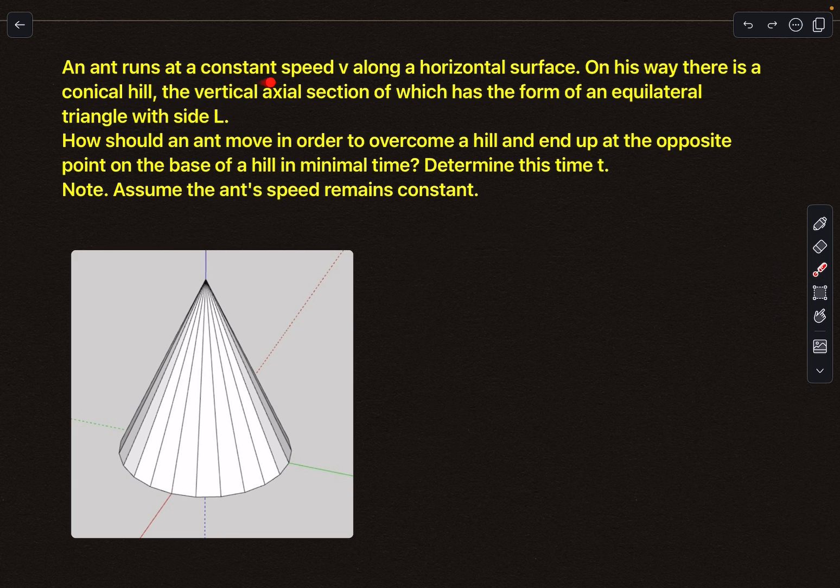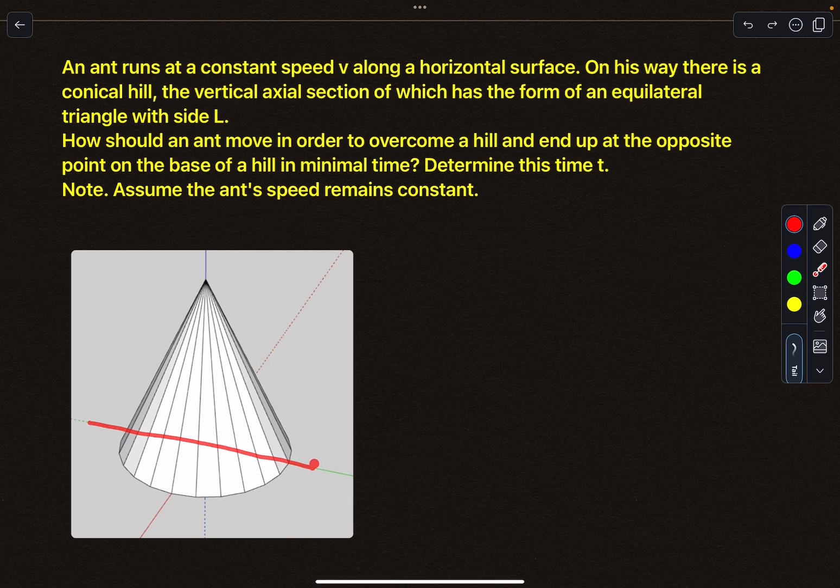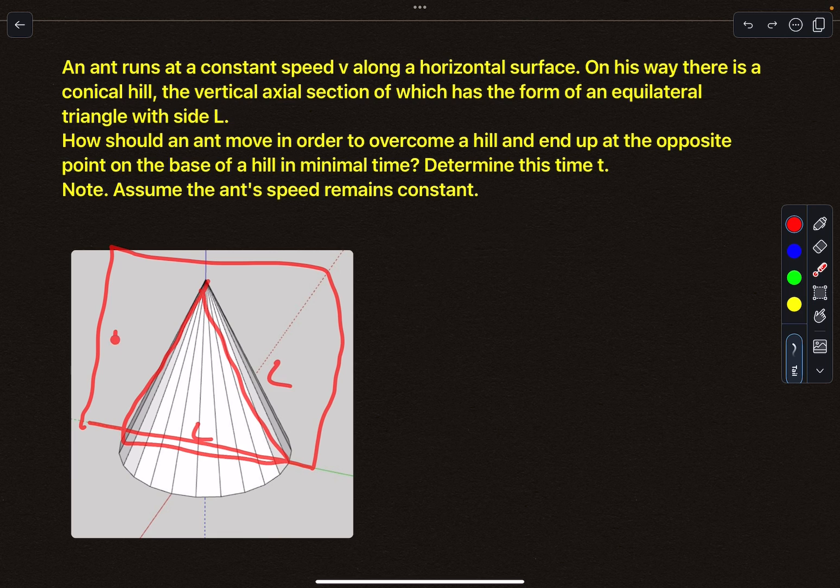An ant runs at a constant speed v along a horizontal surface. On its way there is a conical hill, the vertical axial section of which has the form of an equilateral triangle with side length L. Basically, if you see this green line over here, if you chop the cone about that particular plane, the cross section you obtain is an equilateral triangle.